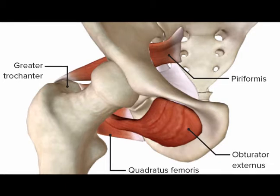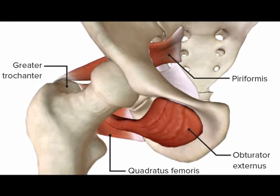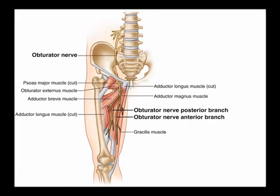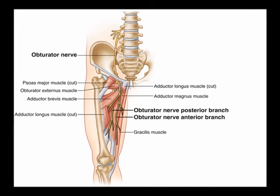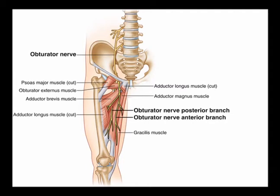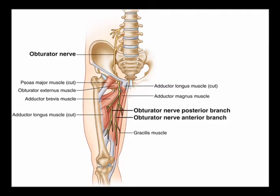The obturator externus is one of six muscles that performs hip adduction when contracted concentrically. These six muscles include the gracilis, the adductor longus, the adductor magnus, the adductor brevis, the pectineus muscle, and the obturator externus.